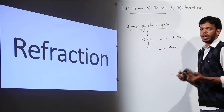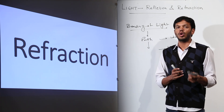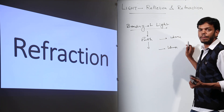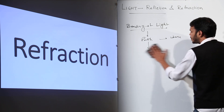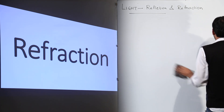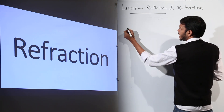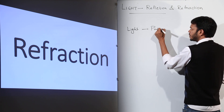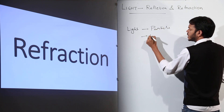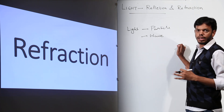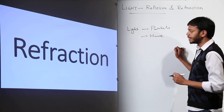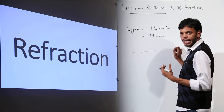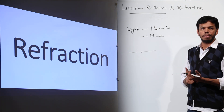I'll explain the exact reason behind refraction, though this is extra detail beyond your syllabus. First of all, light has two types of natures — particle nature and wave nature. So light has a dual nature: particle as well as wave. According to particle nature, light behaves as a particle when it interacts with different materials.